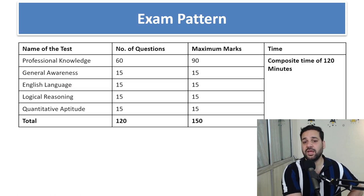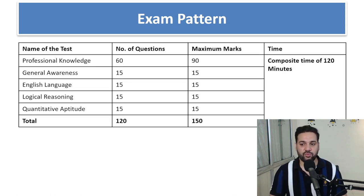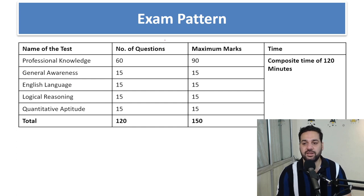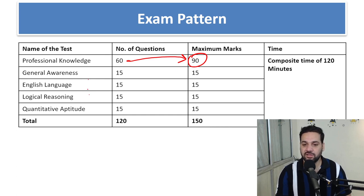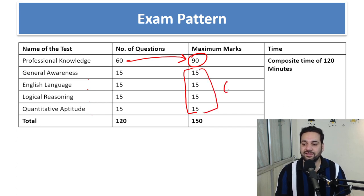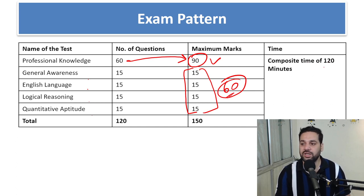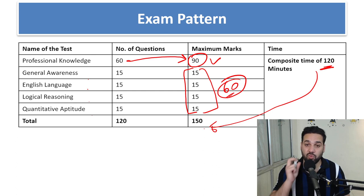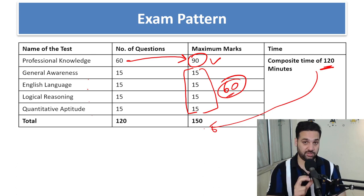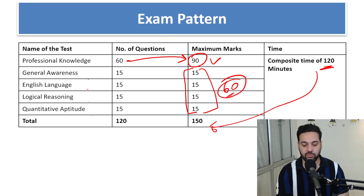For the exam pattern: Professional Knowledge has 60 questions worth 90 marks — this is the maximum weightage section. General Awareness, English, Reasoning, and Quantitative Aptitude have 15 questions each at one mark each, giving 60 marks from those four sections. The total is 150 questions to be completed within 120 minutes.